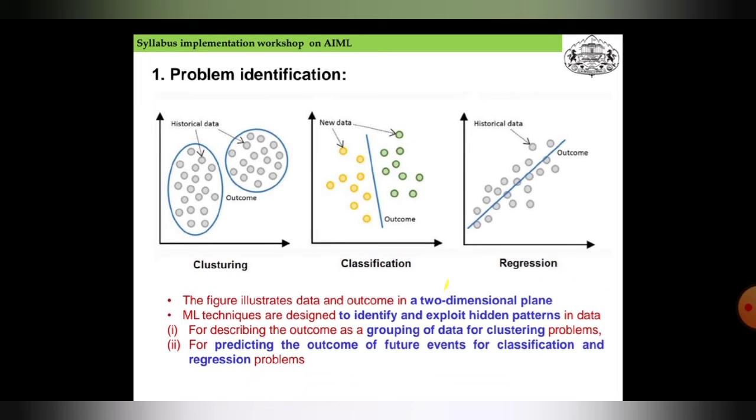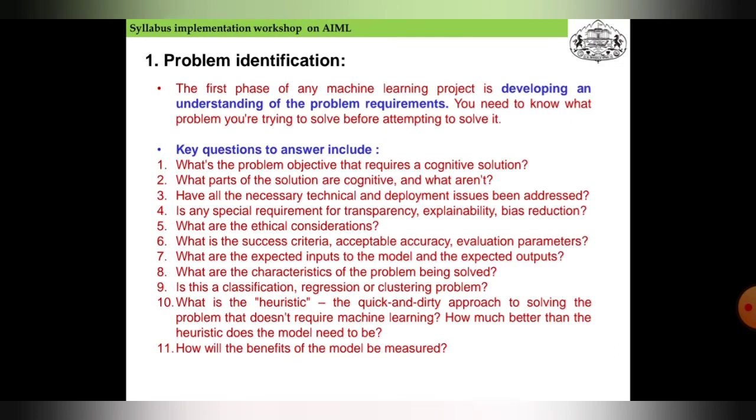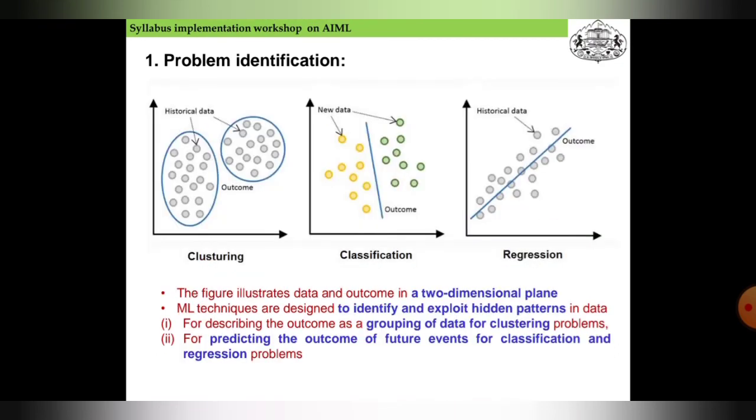The figure illustrates data of an outcome into a two-dimensional XY plane. Machine learning techniques are designed to identify and exploit hidden patterns in data. For example, describing the outcome as a grouping of data for clustering problems, or predicting outcomes of future events for classification and regression problems.